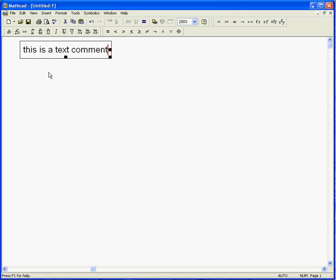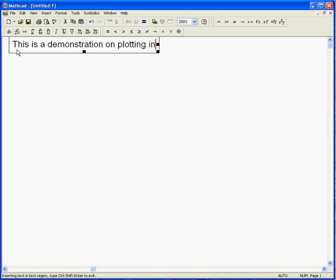Now when you first start typing, MathCAD assumes you're typing a variable name and uses this Times Roman font. As soon as you hit a space, it knows you're not typing a variable because variables aren't allowed to have spaces in them. Watch when I hit the space, the font changes. That's now a text comment that doesn't have any mathematical meaning.